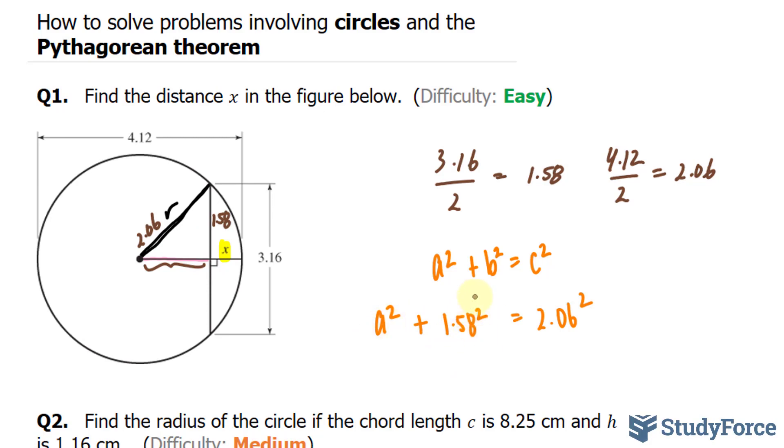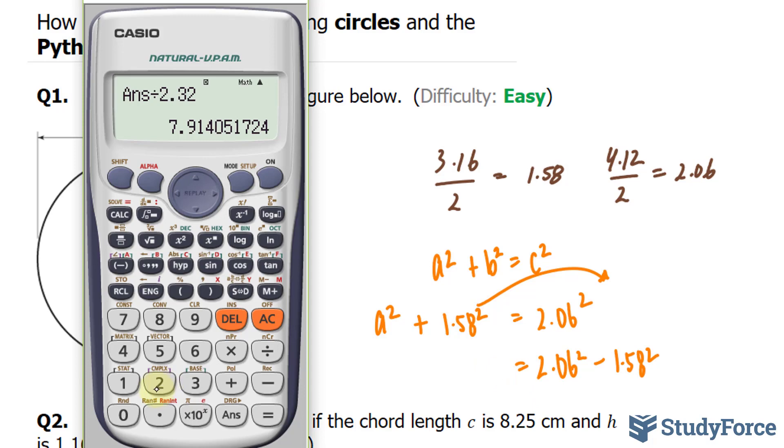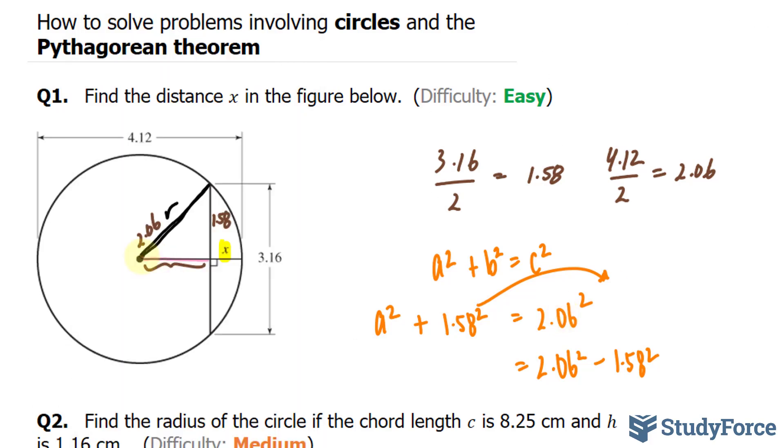We isolate for a by taking this term over, 2.06 squared minus 1.58 squared, and then eventually we square root both sides. So let's do the right side, 2.06 squared minus 1.58 squared, square root that, and we get 1.32. So the length from here to here is 1.32.